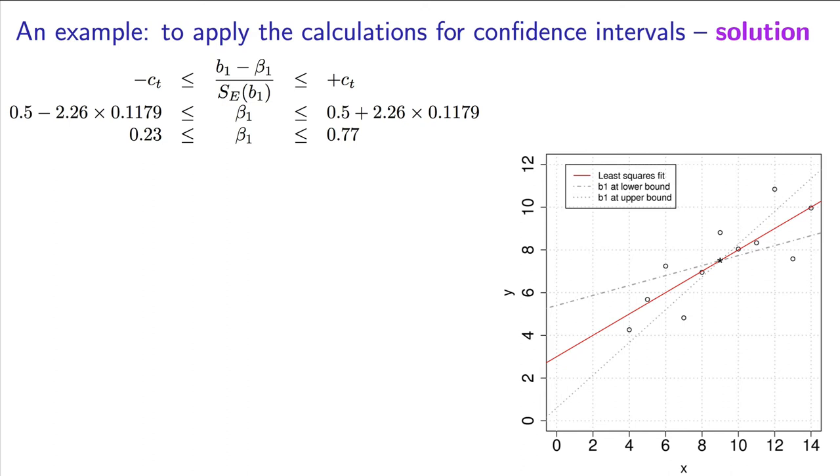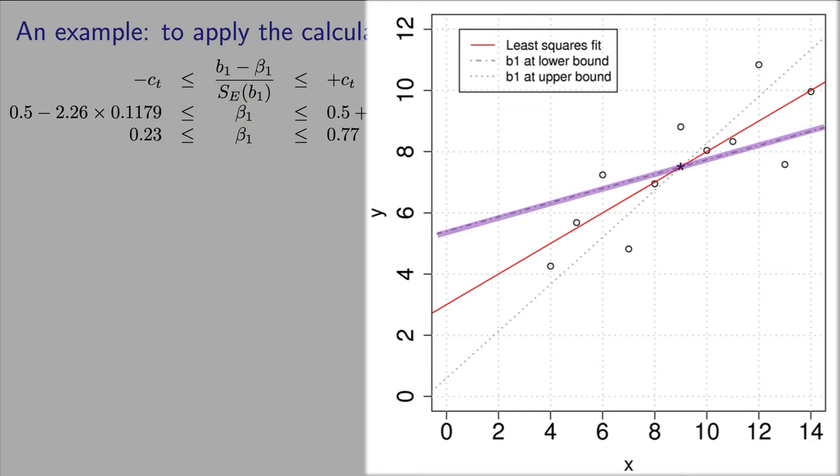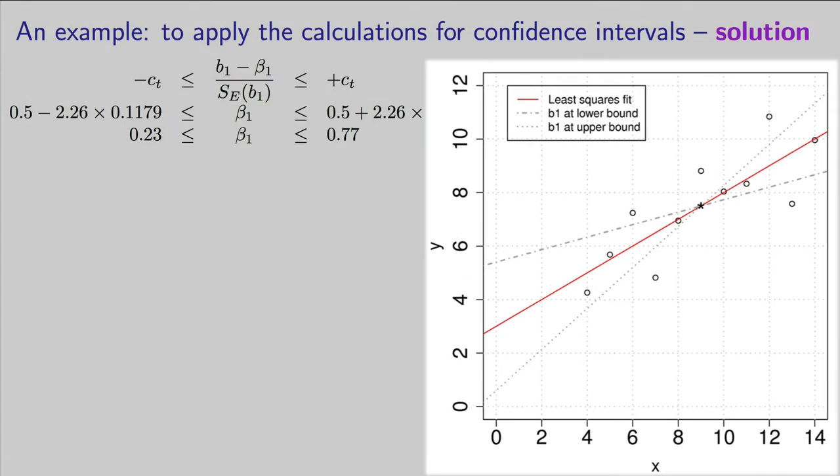When the slope is equal to the lowest point in the bound, 0.23, that's this lightly dashed line over here. When the slope is as high as 0.77, we get this other dashed line. So there's a range of potential values for the true slope coefficient. Notice, of course though, that when the slope coefficient varies between that lower bound and upper bound, the intercept is also changing.